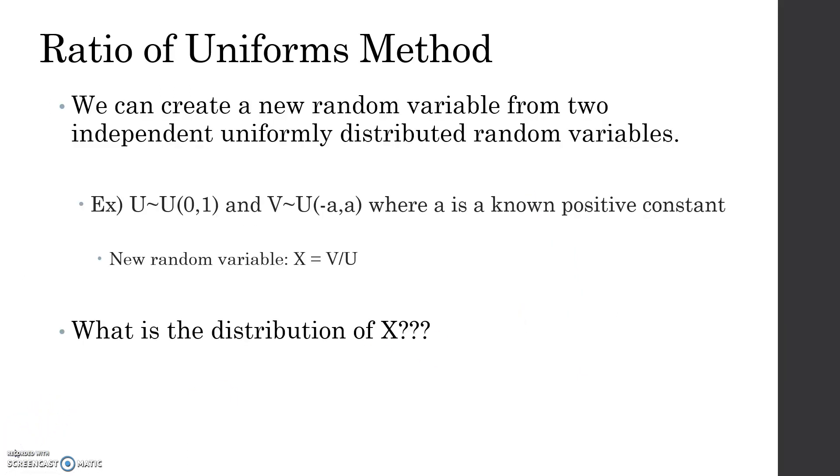Now another method to generate random variates using a ratio of uniforms method. We can create a new random variable from two independent uniform distributed random variables. An example of that would be you have one uniformly distributed distribution u, and another one v. A new random variable can be formed out of this ratio, which would be x, which equals v over u. The challenging part of this would be getting the distribution of x.